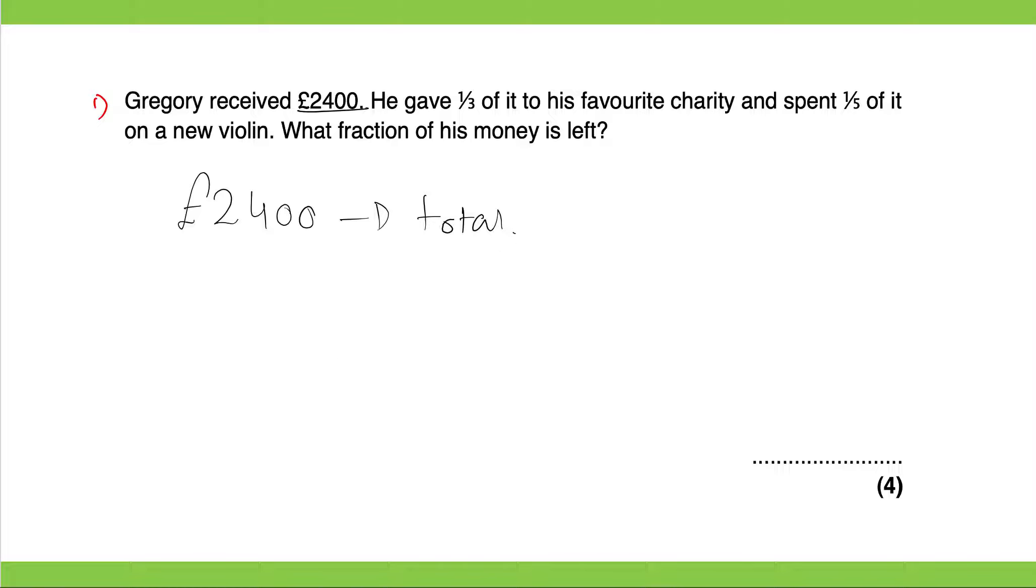And he gave one third of it to his favourite charity. So one third of it to his favourite charity, so that would be £800 to his favourite charity. And he spent one fifth of it on a new violin. So if he gives £800 to a charity, how much do we have left?